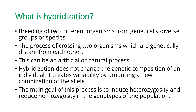The main goal of the hybridization process is to induce heterozygosity and reduce homozygosity in the genotypes of a population. Homozygosity means the passing down of the same genes from generation to generation, so we induce heterozygosity in plants to get different species or different traits of a plant.